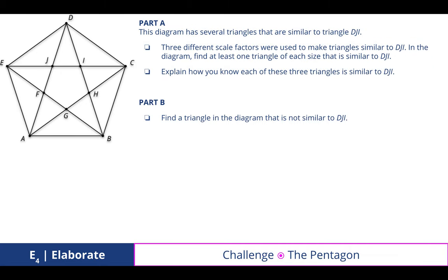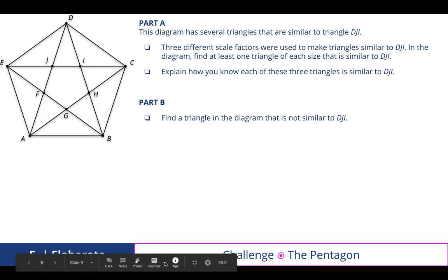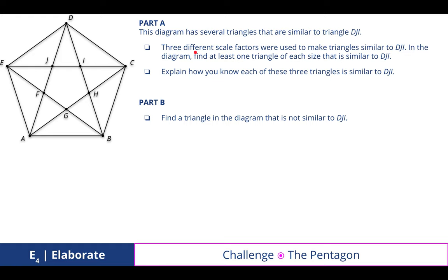The pentagon. In part A, this diagram has several triangles that are similar to triangle DJI, which is right up here. There are three different scale factors that were used to make triangles similar to DJI. In the diagram, find at least one triangle of each size that is similar to DJI. So, find all three of those. And then explain how you know each of these three triangles is similar to DJI.